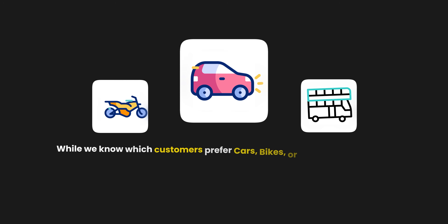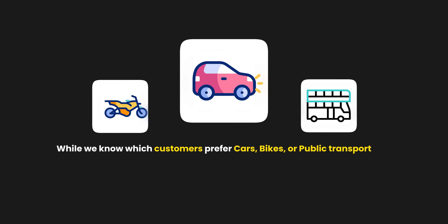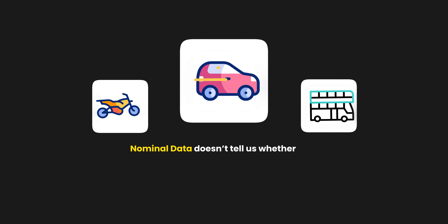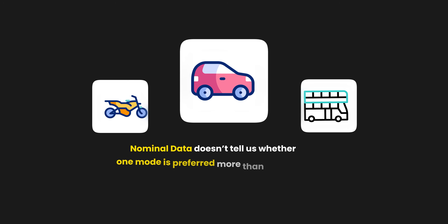However, nominal data only tells us which category each customer or item falls into, but it doesn't show any order or ranking between the categories. For example, while we know which customers prefer cars, bikes, or public transport, nominal data doesn't tell us whether one mode is preferred over another — it just counts the categories.